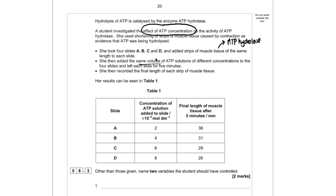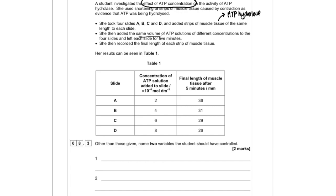And then we're looking at the length of each strip of muscle tissue. And because it's going to contract, the length is going to shorten. So we've got these four different slides. We've got increasing concentrations and we can see that the length is decreasing. So part three, other than those given, name two variables that the student should have controlled.